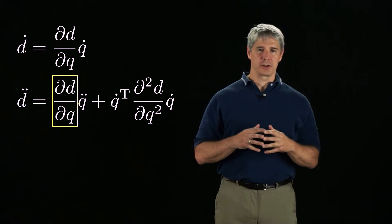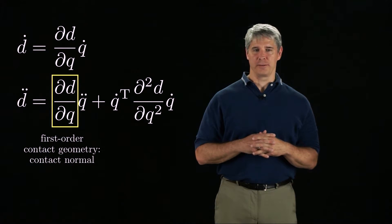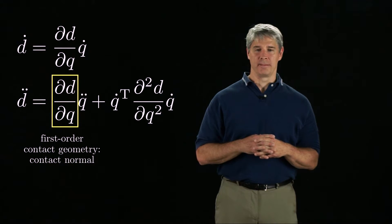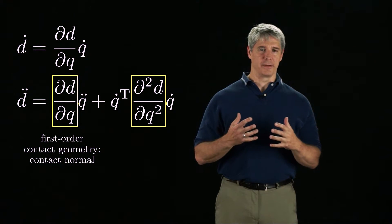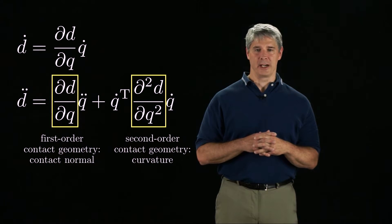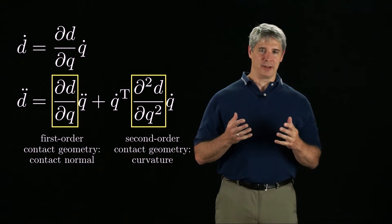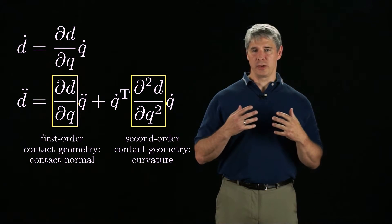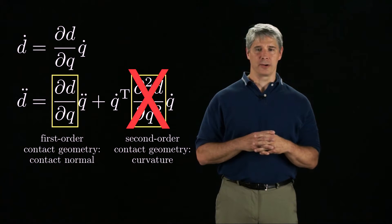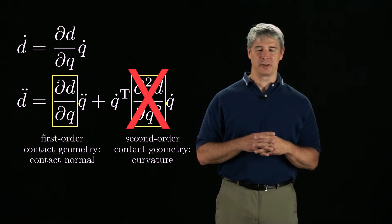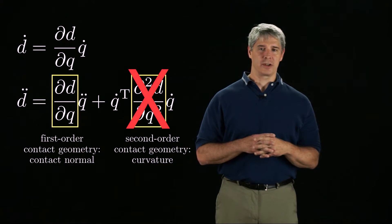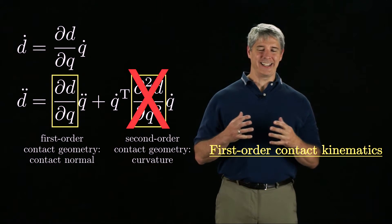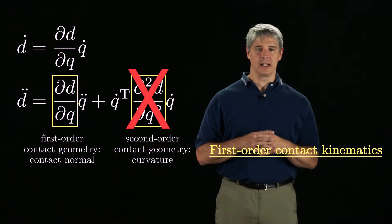The vector of partial derivatives carries first-order information about the contact geometry, called the contact normal, which I'll define shortly. The matrix of second derivatives carries second-order information about the contact geometry, namely the curvature at the contact. For simplicity, in this chapter we assume that the second-order and higher-order information on the contact geometry is not available, and we focus on first-order contact geometry. I will highlight cases where the effect of this decision has consequences.